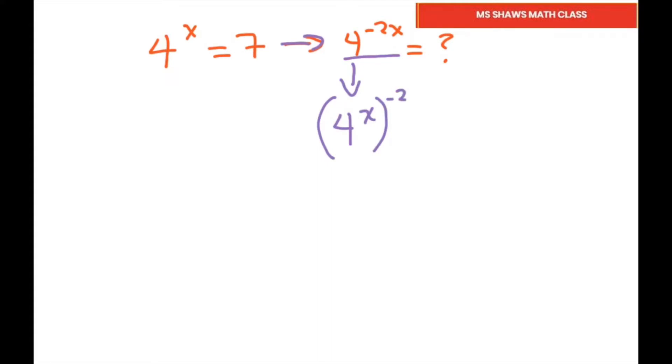So when I do that, that equals that. Now, since I have 4 to the x, I know 4 to the x equals 7, and I could do substitution. So 7 to the negative 2 equals 1 divided by 49.